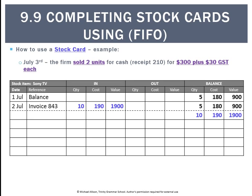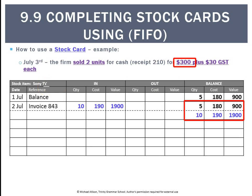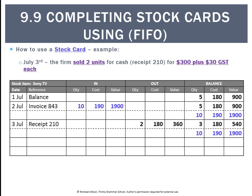The next day, a customer came in and we sold 2 units for cash at $300 each plus GST. The stock card only records the cost price, so the $300 selling price doesn't get recorded anywhere in the stock card. Using first in, first out, the first units in were the $180 units. So if 2 leave the business, they must be 2 units at $180 for a total of $360 in the out column. That leaves 3 at $180 for a total of $540.